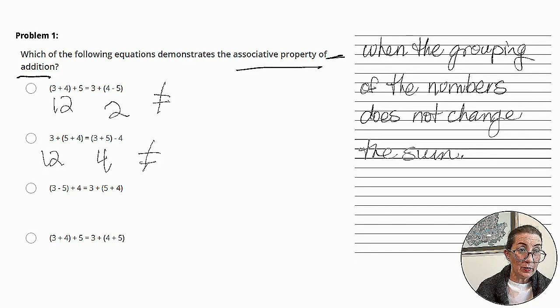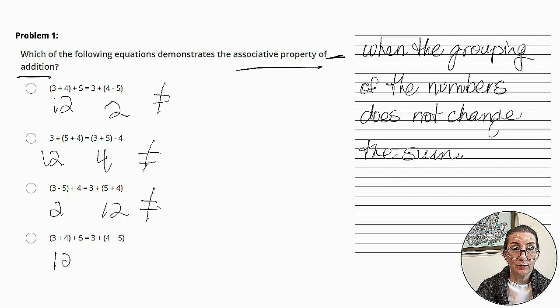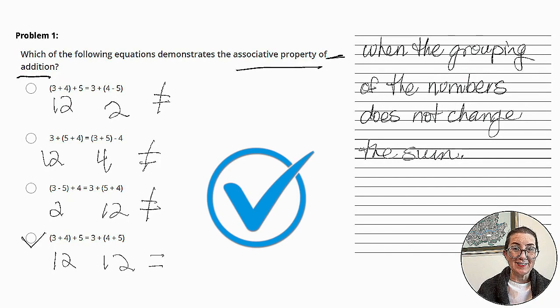The following one is 3 minus 5, which is negative 2, plus 4 is 2. And 5 plus 4 is 9, plus 3 is 12. Again, these are not equal. Now, the last one. 3 plus 4 is 7, plus 5 is 12. 4 plus 5 is 9, plus 3 is 12. This is equivalent. The sums are the same. And so this is our answer.